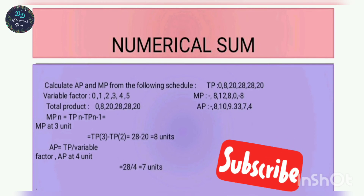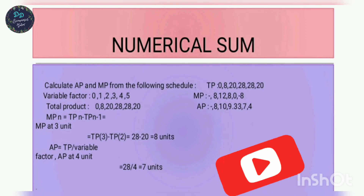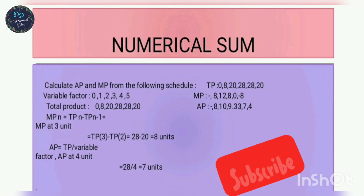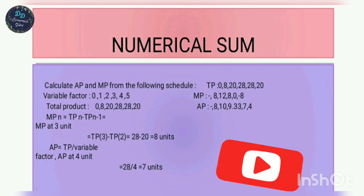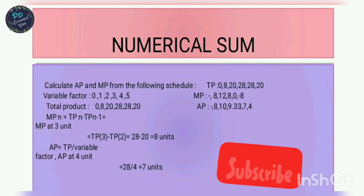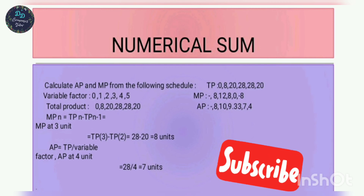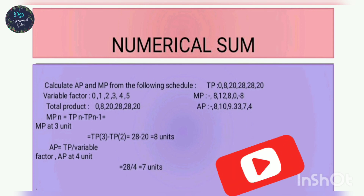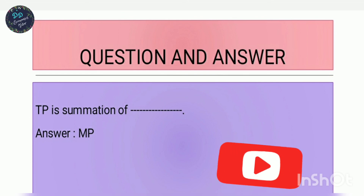For the numerical example: calculate AP and MP from the following schedule. Substituting values into the formula — for MP, use TPn minus TPn-1 (second value minus first value). For AP, divide TP by number of units. For example, AP equals 28 divided by 4, which gives 7. Also, TP equals the summation of MP.